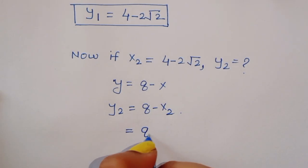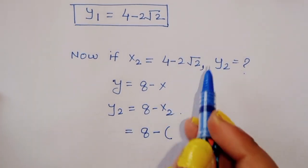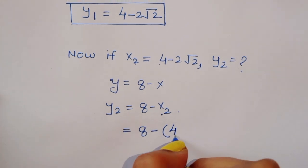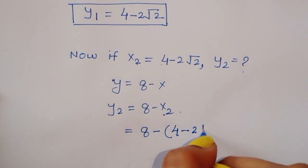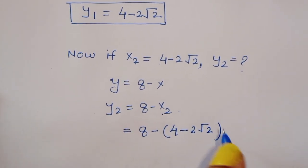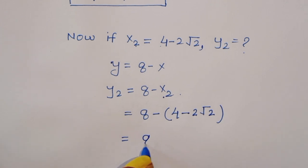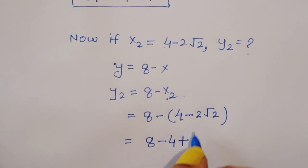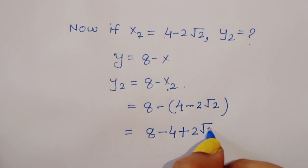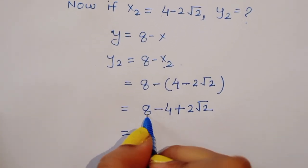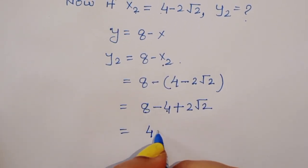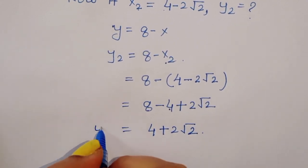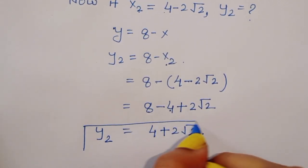y2 is equal to 8 minus (4 minus 2 root 2), which gives 8 minus 4 plus 2 root 2, so y2 is equal to 4 plus 2 root 2.